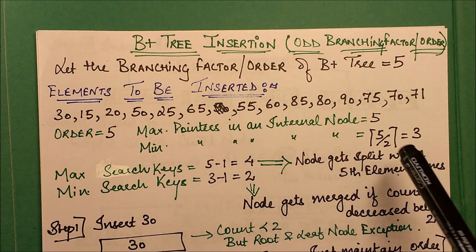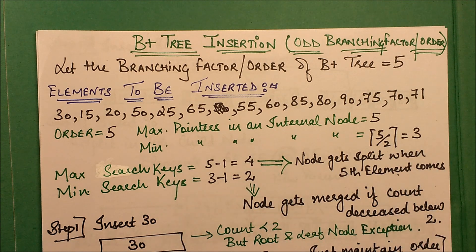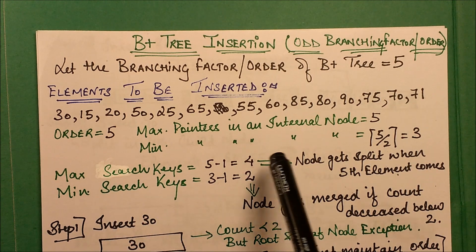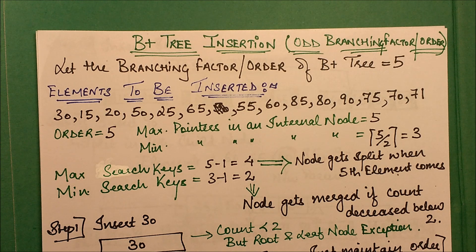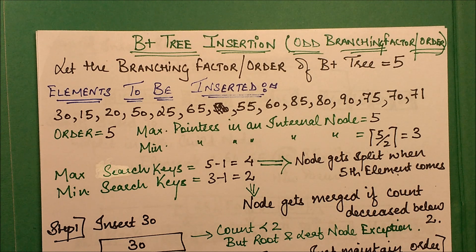The minimum pointers will be ceiling of 5/2, which is 3. Similarly, maximum search keys will be 5 minus 1, which is 4, and minimum search keys will be 3 minus 1, which is 2. These basics were discussed in the first B+ tree video — please refer to that playlist.